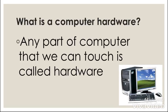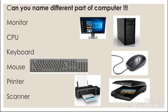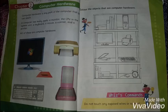There are different parts of computer. So can you name them? There are many computer parts that we can touch. The most commonly used are monitor, CPU, keyboard, mouse, printer, and scanner. These are the hardware of computer because we can touch them.